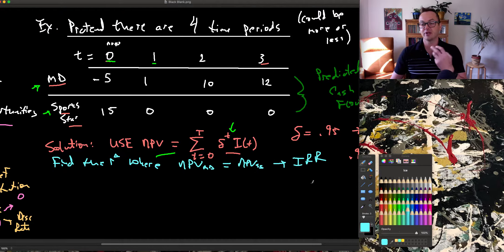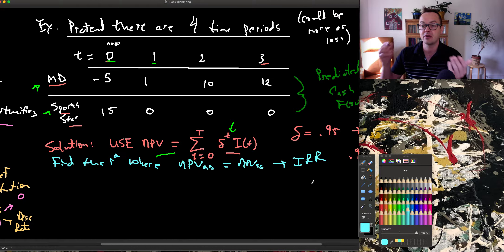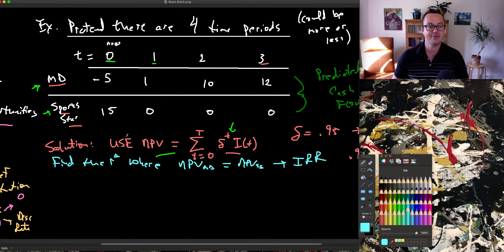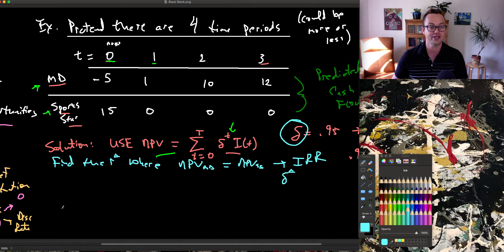It's the rate related to our discount factor now, where either financial choice becomes indifferent. So what I want to do here is I need to solve for delta, delta star, where these are equalized. So I'm not putting 0.95 and solving. I'm solving for delta itself.